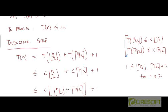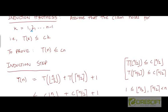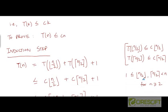Why do these assumptions hold? Well, they will hold assuming that the arguments here — the floor of n by 2 and the ceiling of n by 2 — fall into this range from 1 to n minus 1. That is, both these terms need to be greater than or equal to 1 and can at most go up to n minus 1. This will be true for all values of n greater than or equal to 2, and they will also be greater than or equal to 1.